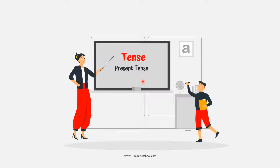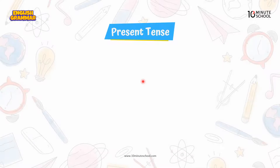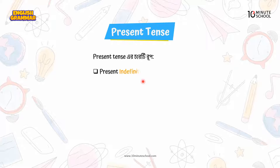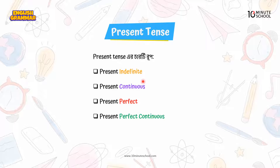In today's class, we will talk about Present Tense. Present tense has four types: Present Indefinite Tense, Present Continuous Tense, Present Perfect Tense, and Present Perfect Continuous Tense.